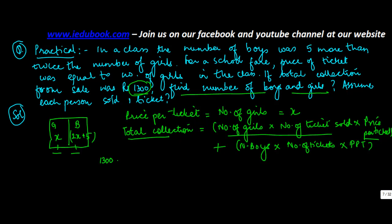1300 is equal to number of girls in the class. So how many girls were there? x, into number of tickets sold. So there were x number of girls and each girl sold how much? One ticket. So what is the price of ticket? The price of ticket was equal to number of girls in the class, which is x.